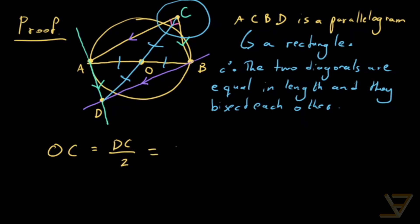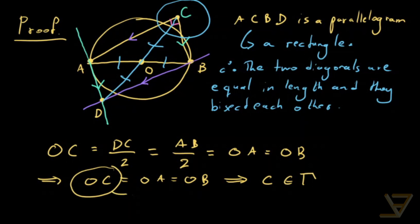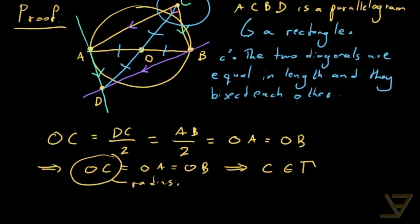And that's equal to AB over 2, because the two diagonals are equal in length, and AB over 2 is equal to OA and OB. So what that means is OC is equal to OA is equal to OB, and that means that C is an element of the circle, because OC here is a radius, so that forces C to be on the circle.